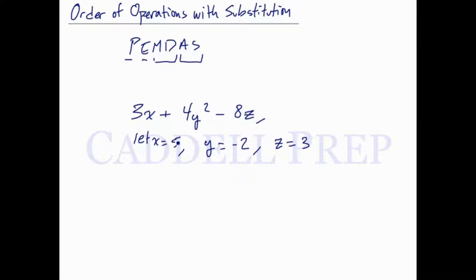In order to evaluate this, what we should do is substitute these numbers in using parentheses. This is 3x, so it's 3 times 5. y is negative 2, so we have negative 2 squared.